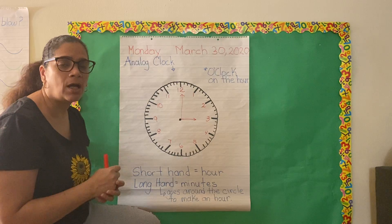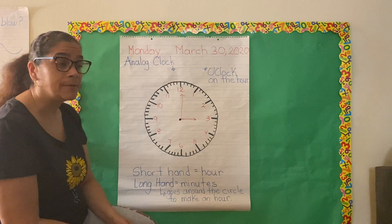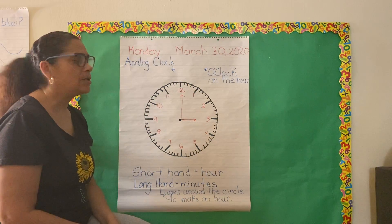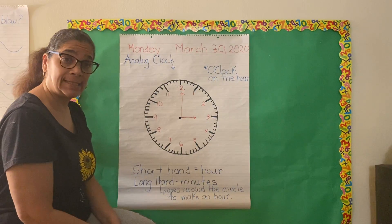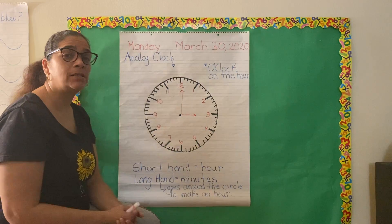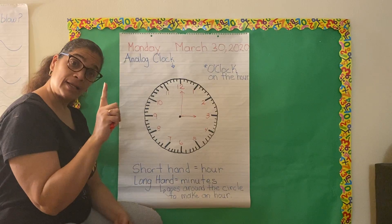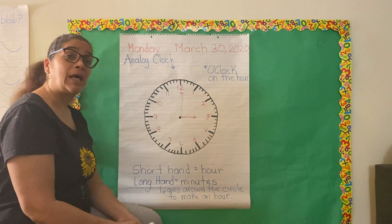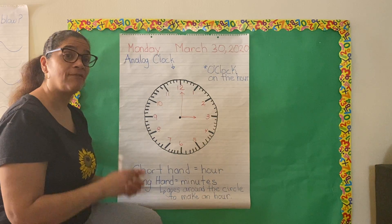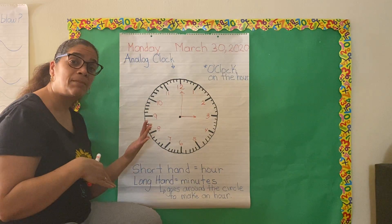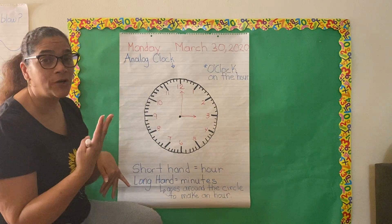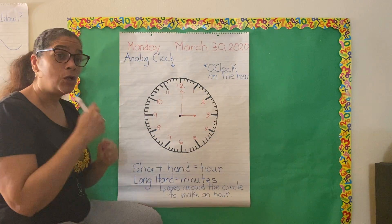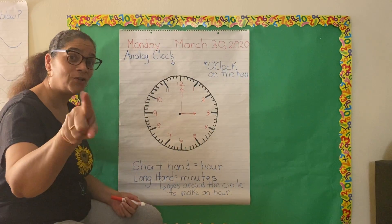Let's talk about the little lines you see between the hours — those are called minutes. One interesting thing we talked about is that one minute is made up of 60 seconds, so if we count from one to 60, we will have counted one minute. Then we have five minutes, ten minutes, fifteen minutes, twenty minutes, thirty minutes, thirty-five minutes, forty minutes, forty-five minutes, fifty minutes, fifty-five minutes, sixty minutes — we have an hour. As you notice, I was counting by fives, and you know how to count by fives.